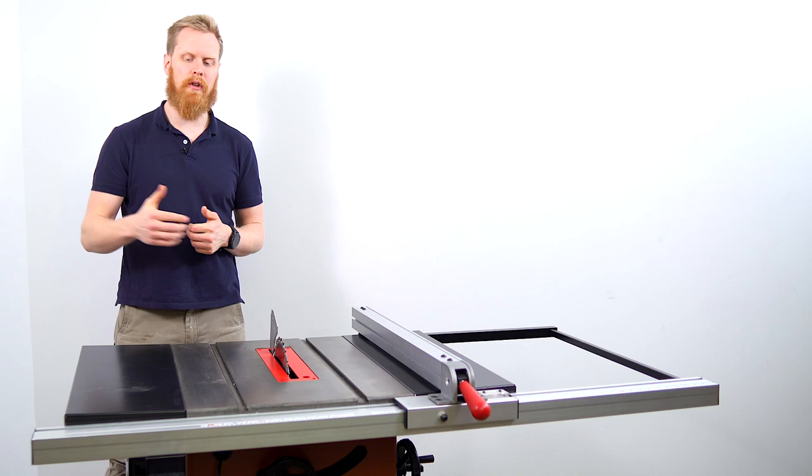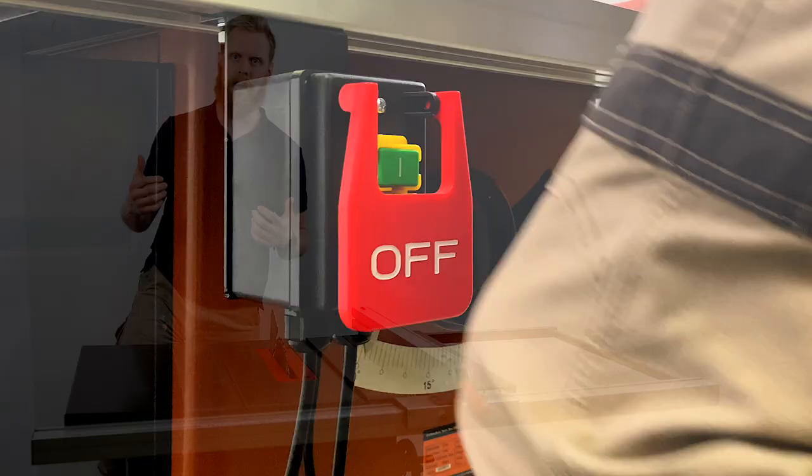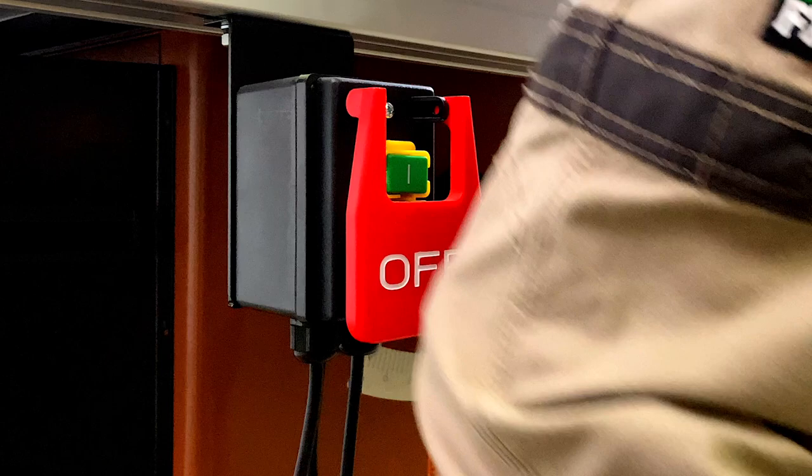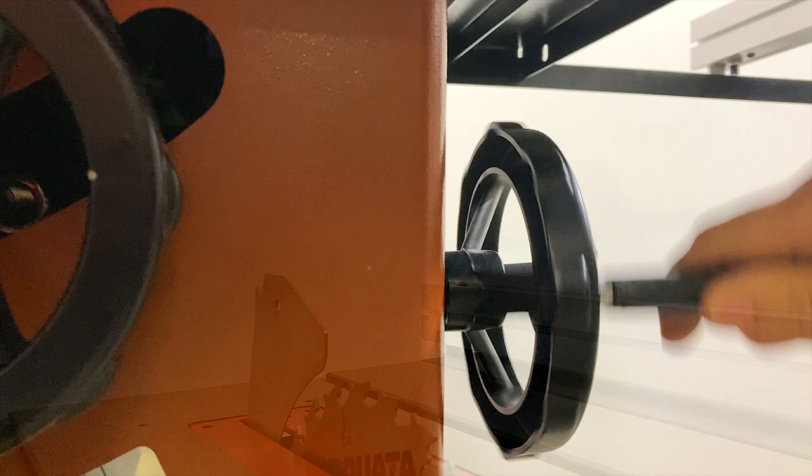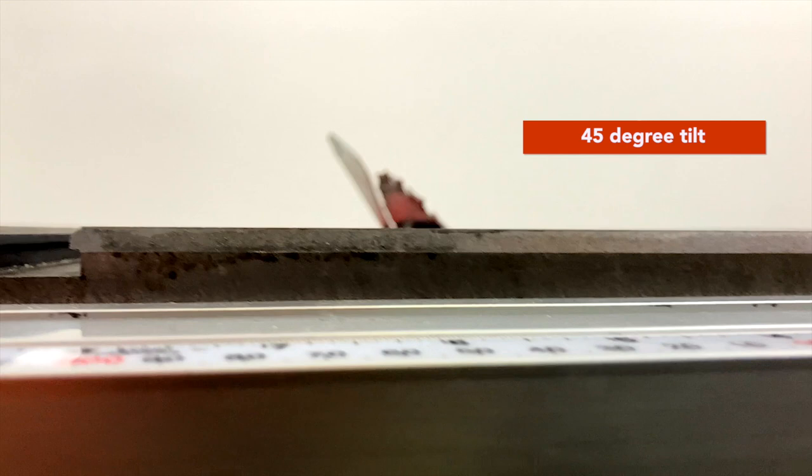At the front you'll find the stop and go button. The stop is nice and big and within reach of your knee so if you've got someone tailing out and they're not paying attention you can just shut it straight off by yourself. The wheel at the front is for height adjustment. This unit with a 250 mil blade will give you a max cutting height capacity of 76 millimeters and the wheel on the side is for your 45 degree tilt. It will go down to 45 degrees left of the blade which will make ripping bevels much safer.